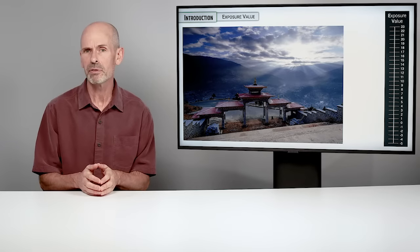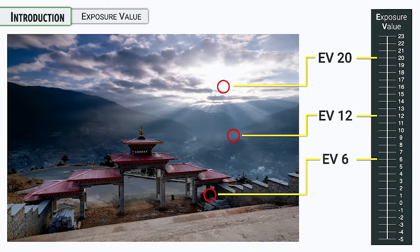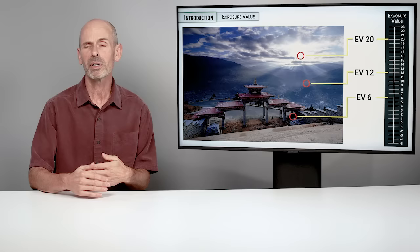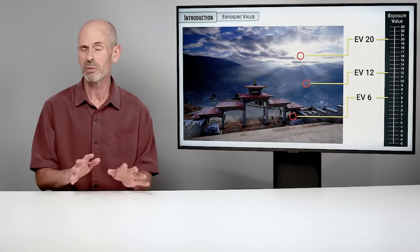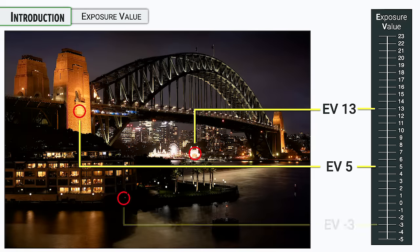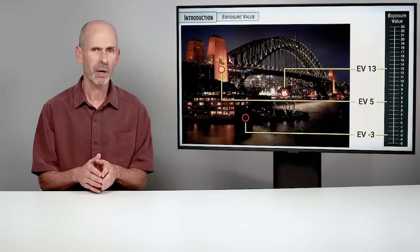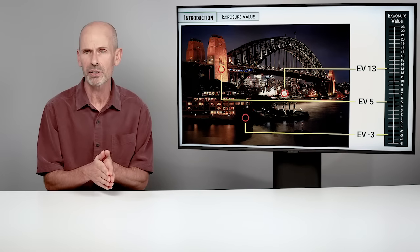When you look at a particular photograph, you can analyze different areas and measure the brightness to see where they fall on the EV scale. Your camera cannot handle EV 23 and EV minus five all in the same shot, at least not without some trickery. Think about the brightness range in the frame — what's the brightest element, what's the darkest, and what is the range between them? The more you know about light, the better you'll be able to handle your exposures.